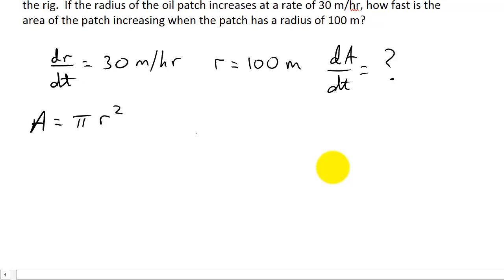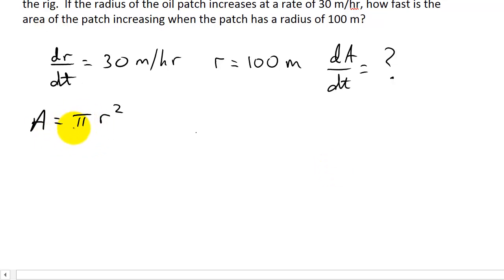So now we want to differentiate this with respect to t. So that would be dA/dt is equal to, taking the derivative of this, pi is just a constant so we bring the two down, so that's 2π, subtract one and that would be r to the first times dr/dt.